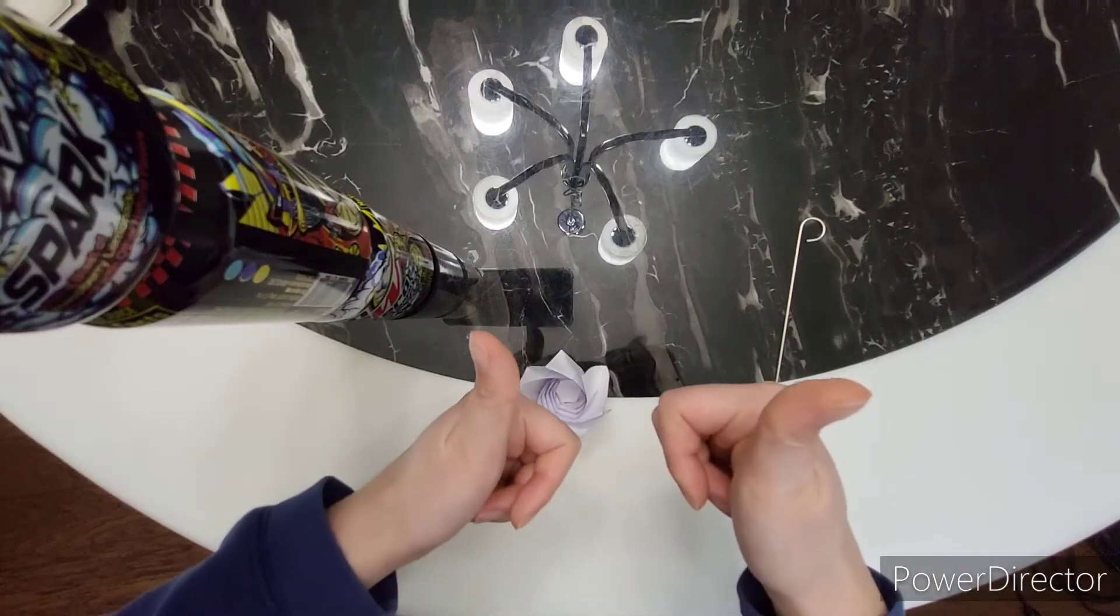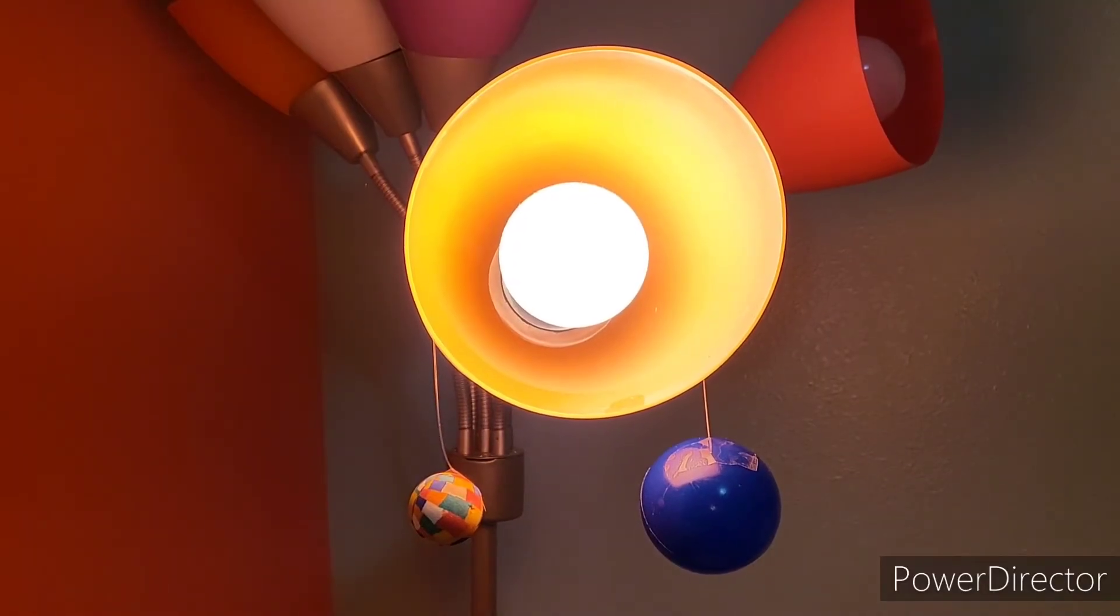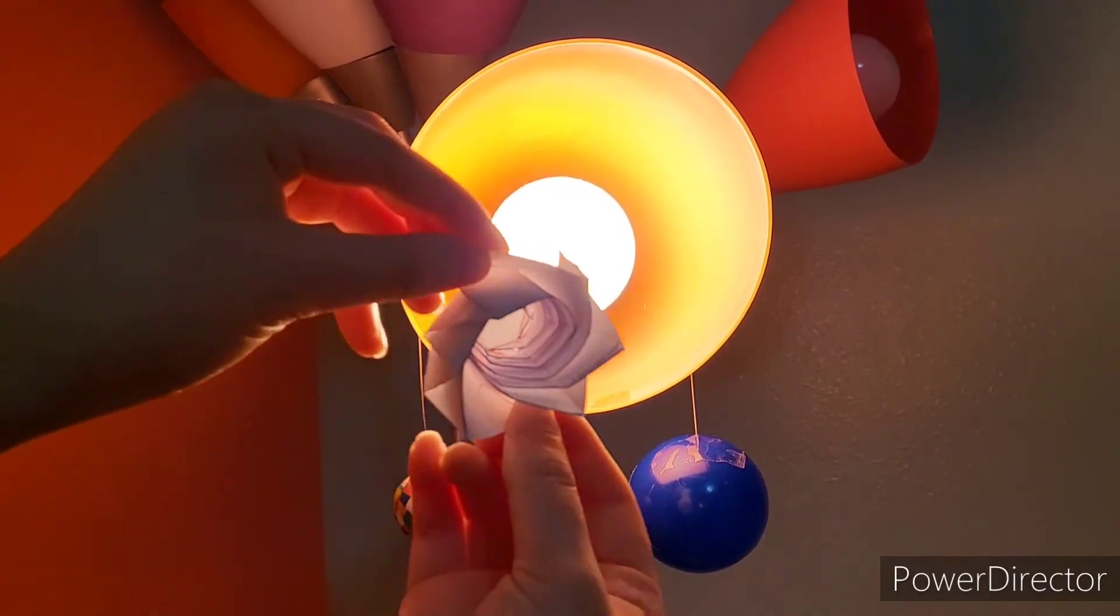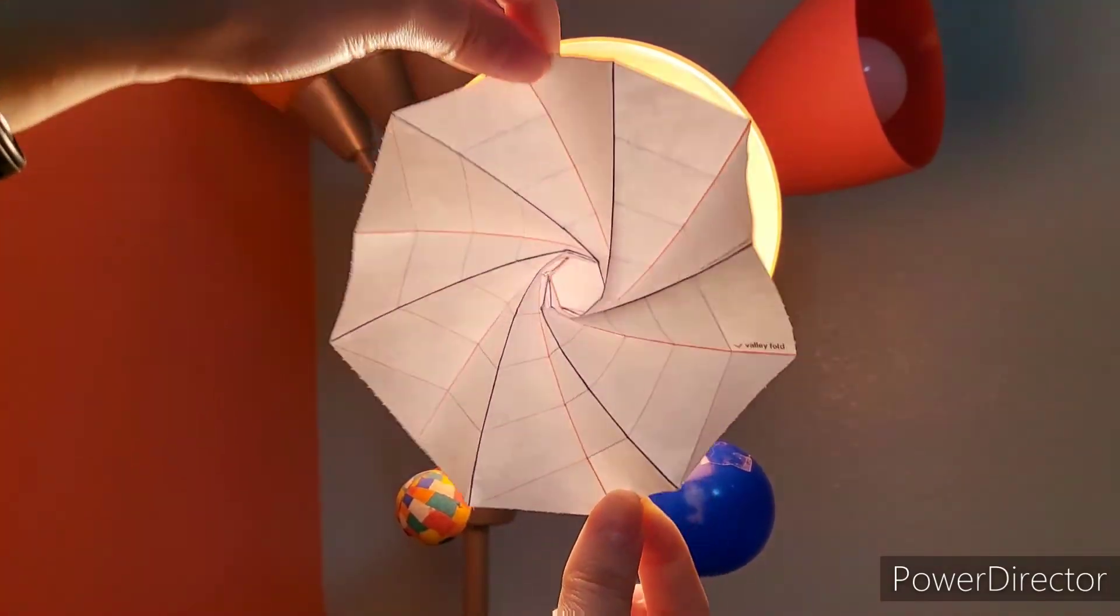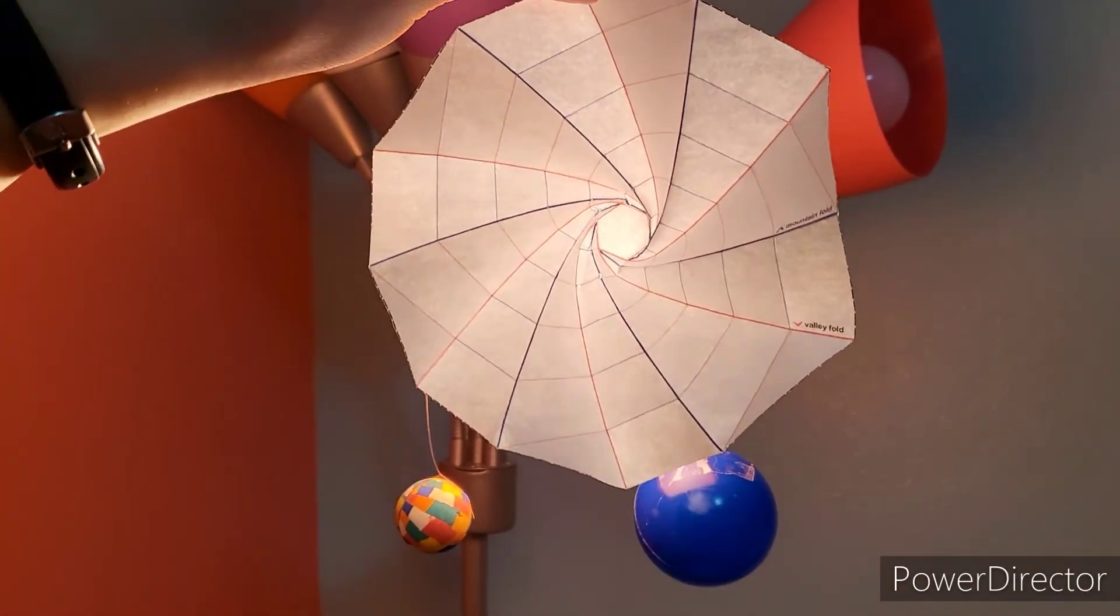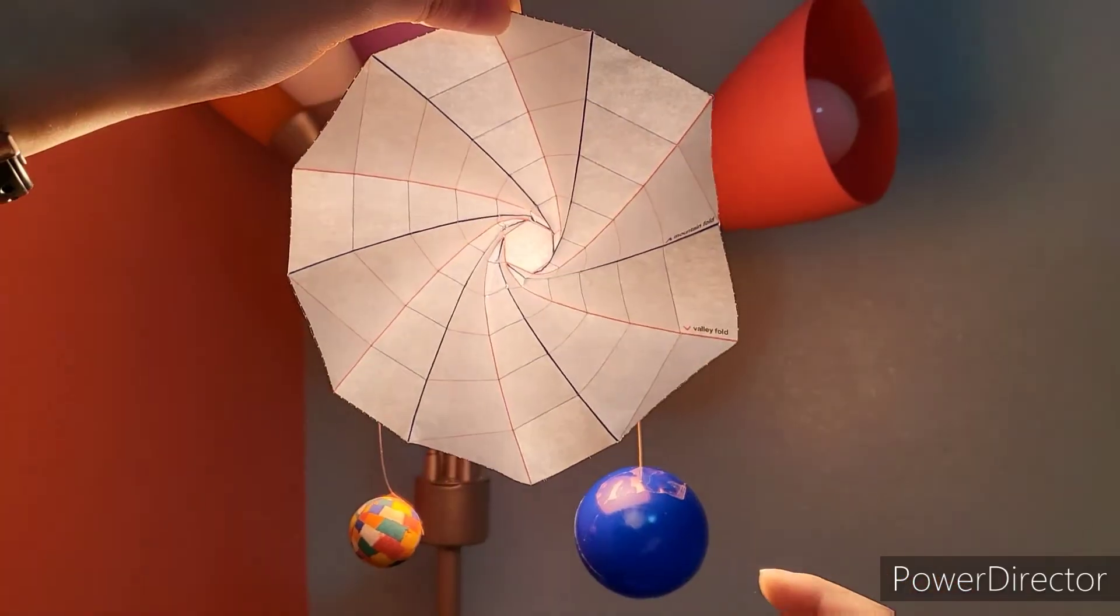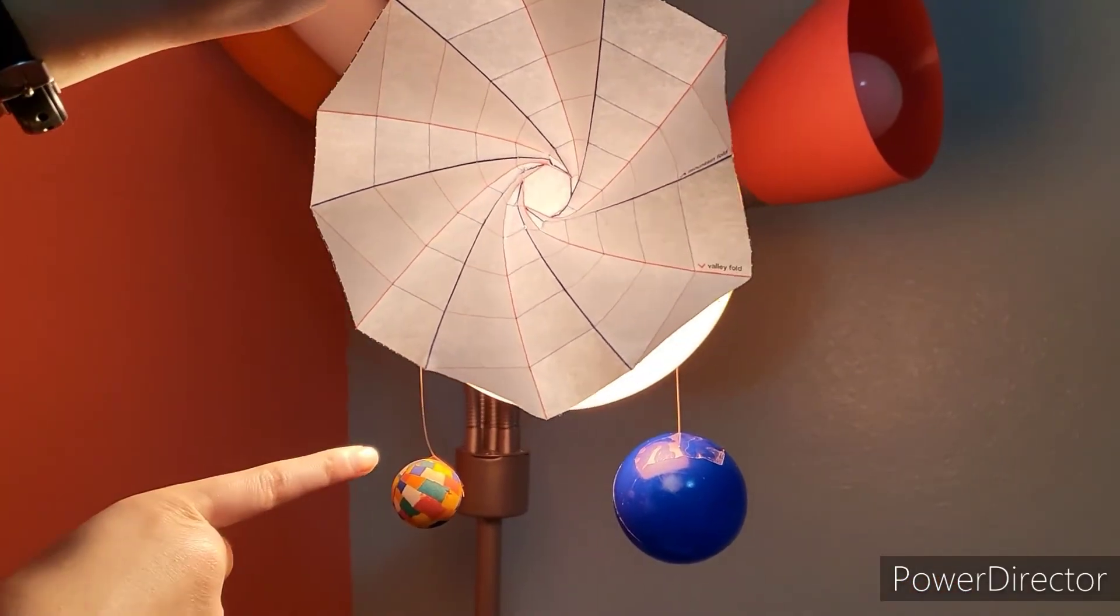And we're done! For some bonus footage, here is a model of how the starshade is used. It would expand towards the sun, decreasing the glare as a telescope takes the picture. You can see these two planets over here.